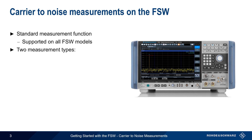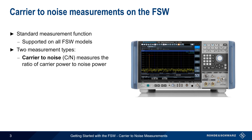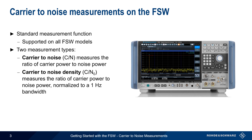There are actually two different types of Carrier-to-Noise Measurements. Standard Carrier-to-Noise Measurements are simply the ratio of the carrier power to the noise power within a given bandwidth, and has units of dBc. Carrier-to-Noise Density is the ratio of the carrier power to the noise power, but with the noise power normalized to a 1 Hz bandwidth, so units will be in dBc per Hz.